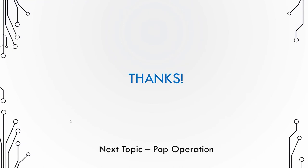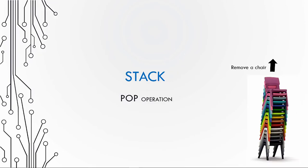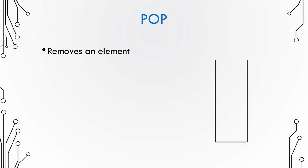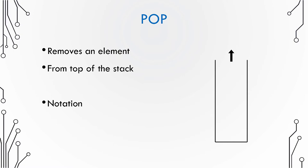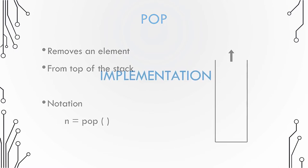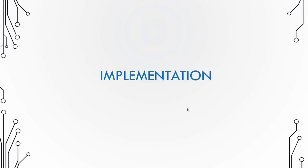That was how you perform a push operation on a stack. Next we are going to check how to perform the pop operation. A stack pop operation corresponds to removing a chair from a stack of chairs. Pop operation removes the element only from the top of the stack. The notation for pop is simple — pop returns the value that has been popped out.